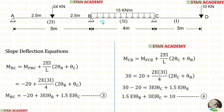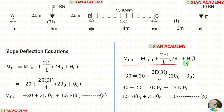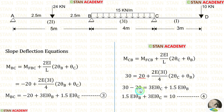Now let us make the slope deflection equations for span BC. We apply the fixed end moments, a length of 4 meters for BC, and a moment of inertia of 3i. Using the second equilibrium equation with MCB equal to 30 kN·m, we take 20 to the left side where it becomes negative. So 30 minus 20 gives us 10, which is our second equilibrium equation.